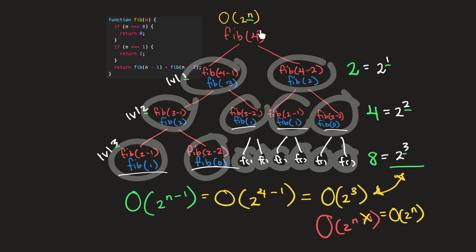Regardless of what number we pass into this function, at the bottom-most level there's always going to be a gap on this right side. But that's okay because we're only looking for an upper bound. So these extra calls are just here to help you visualize what is actually happening and why this function is considered to be of exponential growth. And that is why recursive Fibonacci is of exponential time complexity.